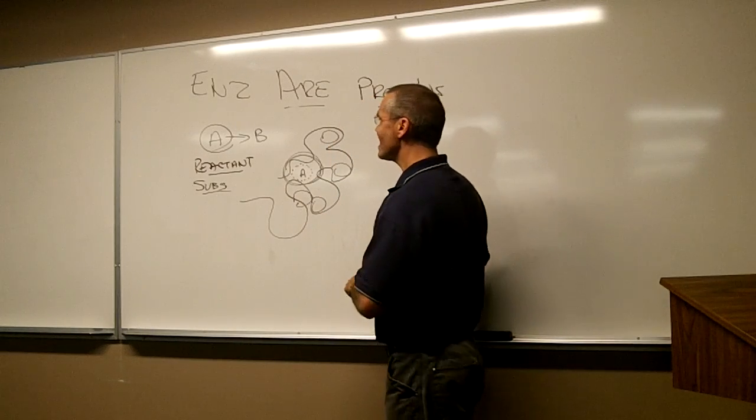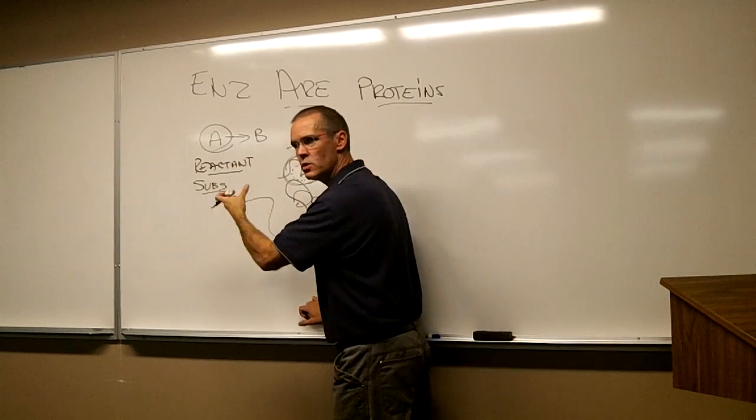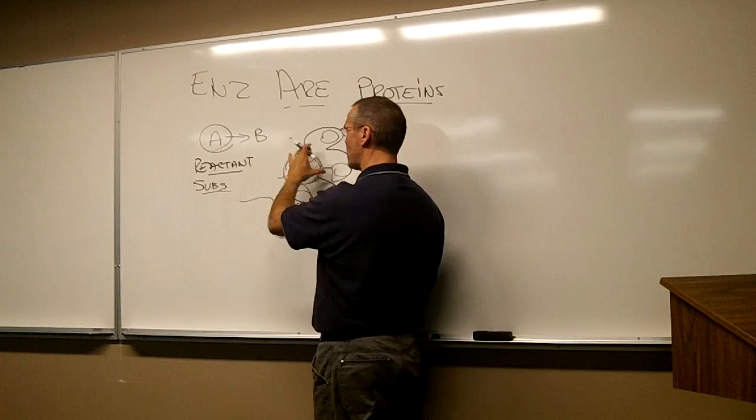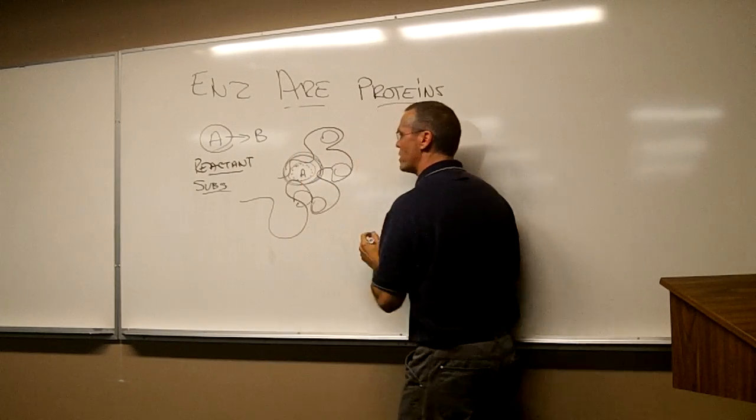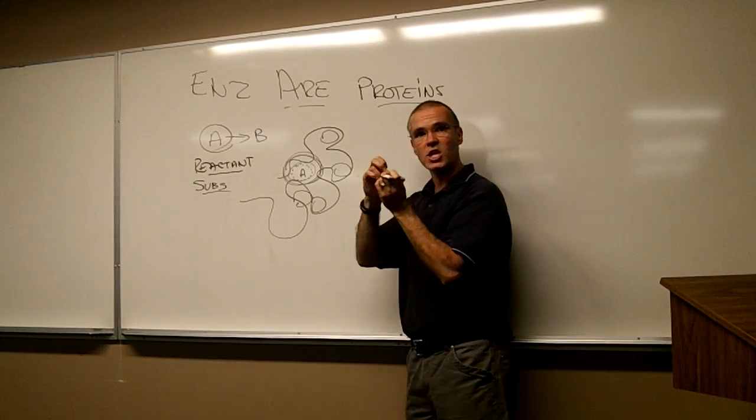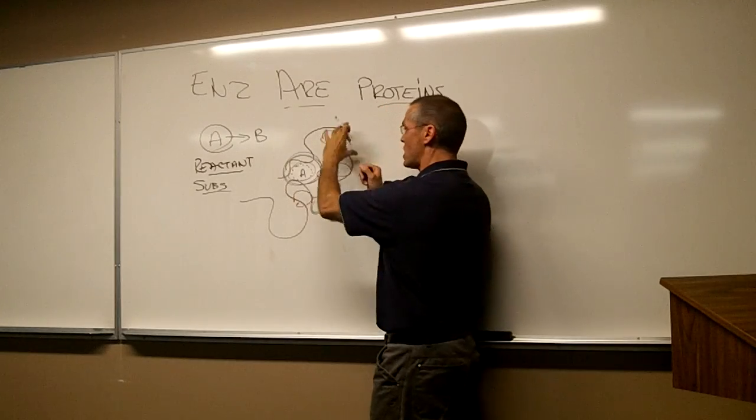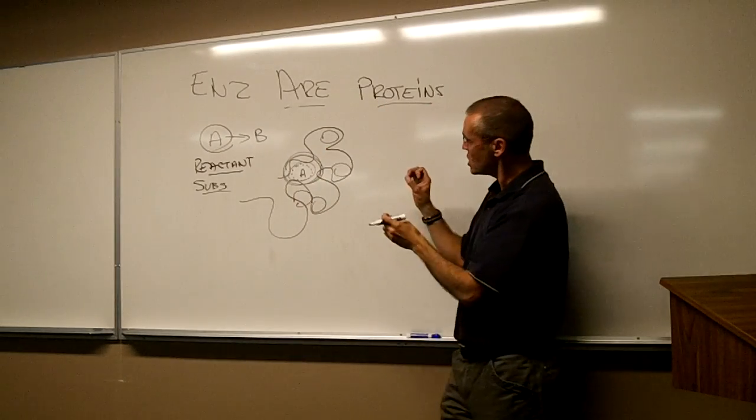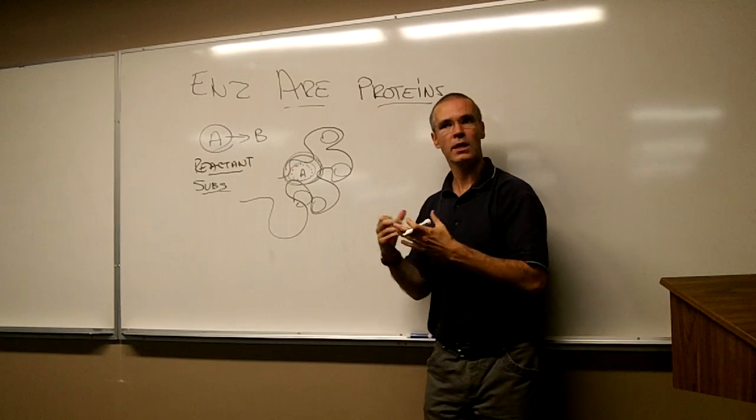So we say that the enzyme is specific to the substrate, and the substrate is specific to this enzyme. So this enzyme here only reacts with reactant A. You change the shape of this reactant by just changing one little thing, it won't fit. You change the protein, the enzyme, by just changing one amino acid, it won't fit. That can cause diseases.